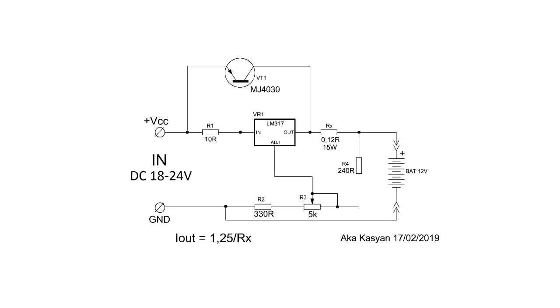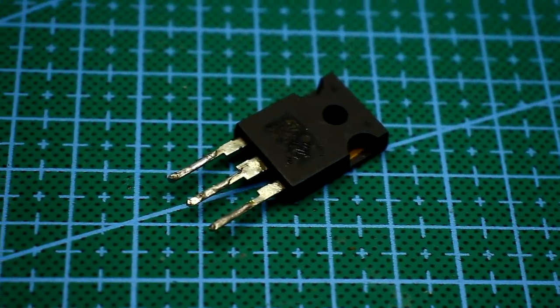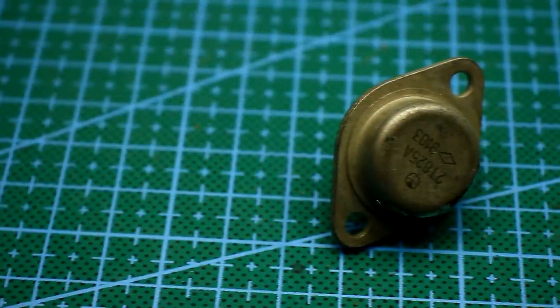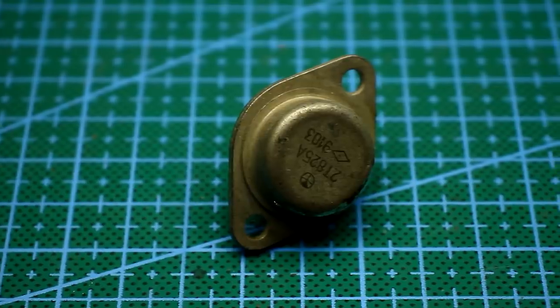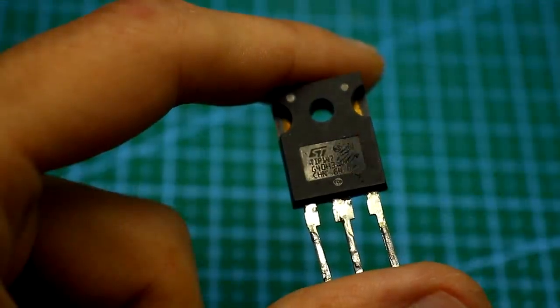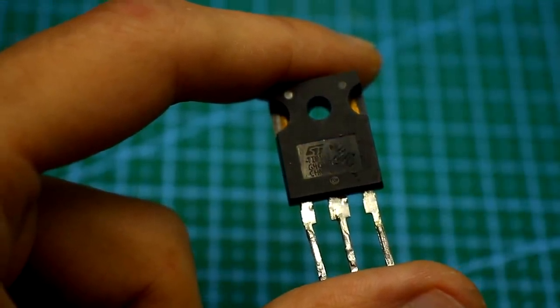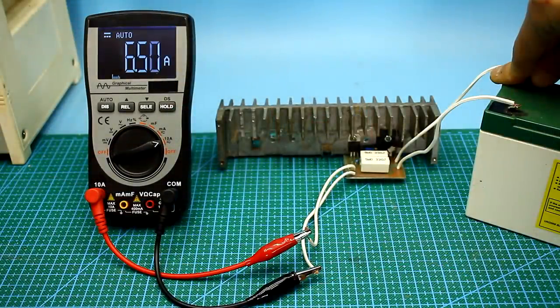The output current of the circuit can be calculated by the same formula as in the case of the first circuit. I think it's clear that the output current should not exceed the permissible collector current of the transistor. In my case, the transistor is 10A, so the maximum current made a little less for safety.